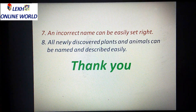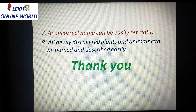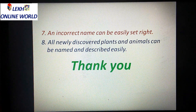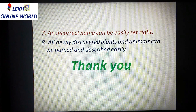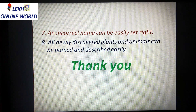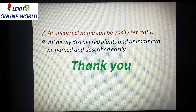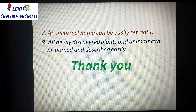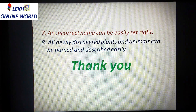An incorrect name can be easily set right — in the binomial nomenclature system, even an incorrect name can be corrected. All newly discovered plants and animals can be named and described easily — we can provide naming and description for all newly discovered plants and animals.